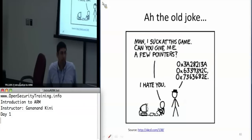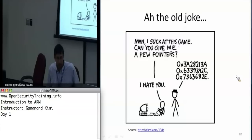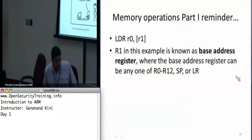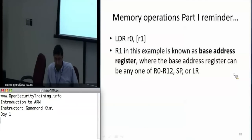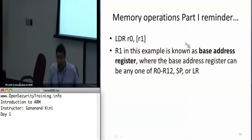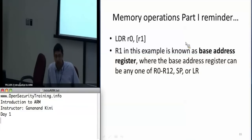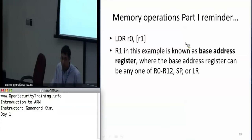We're going to be covering memory operations in more detail. Last time we referred to something called the base address register, which is the R1 from the LDR instruction — the one in square brackets. That's the register that has the actual address you want to operate on, so it's called the base address register.